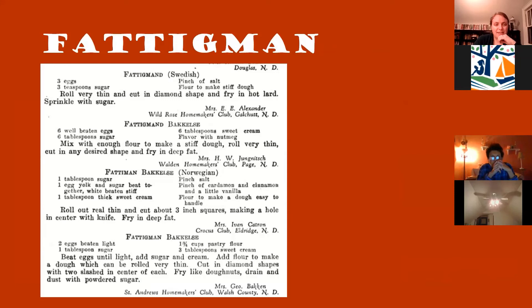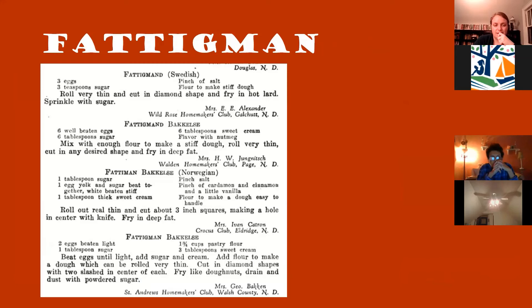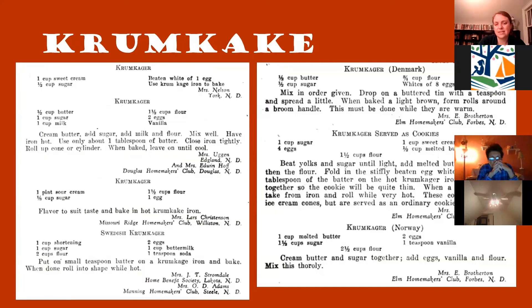Fattigmann are a little bit different — they don't have any fat in them usually, which is a little bit interesting compared to most of the others. Some do call for heavy cream to make them, but the fat comes from frying them. And then the krumkake — I included again a million recipes. You can see a lot of phonetic spelling: 'crumcake' instead of 'krumkake.' I like that there are recipes from all three countries: Swedish, Danish, and Norwegian.